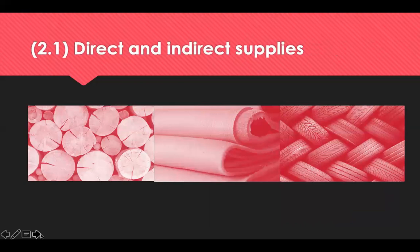Direct supplies are those that can be easily identified, measured, and directly charged to the cost of production — they are also part of the finished product. Examples of direct materials include timber for furniture making, leather for shoe making, or rubber in tyre manufacturing. Indirect supplies are those materials that cannot be conveniently identified and allocated to a cost centre or unit. Examples of indirect materials might include tools, safety equipment, and operating supplies used in the manufacture of goods.